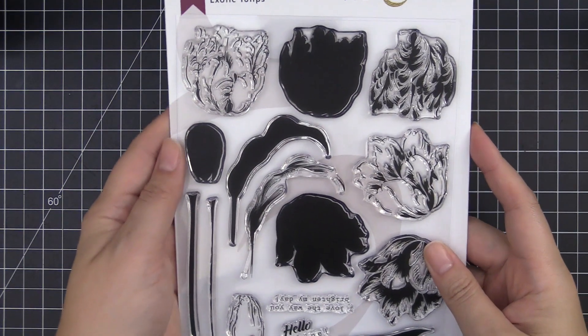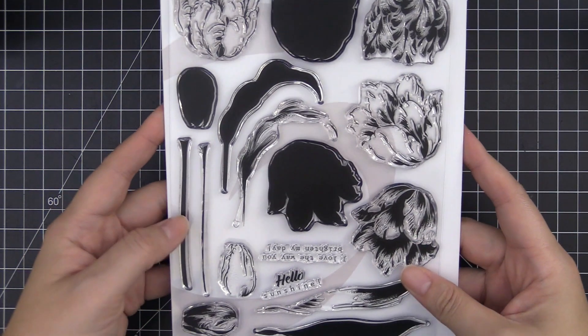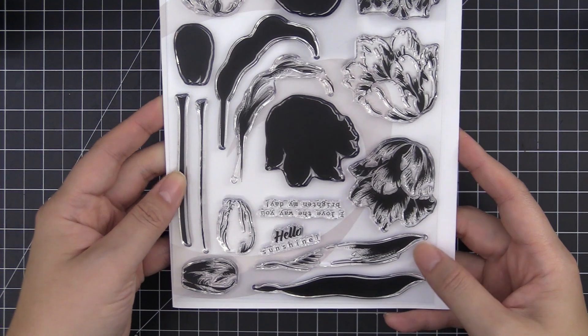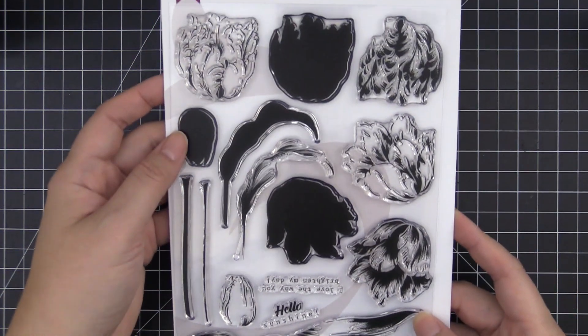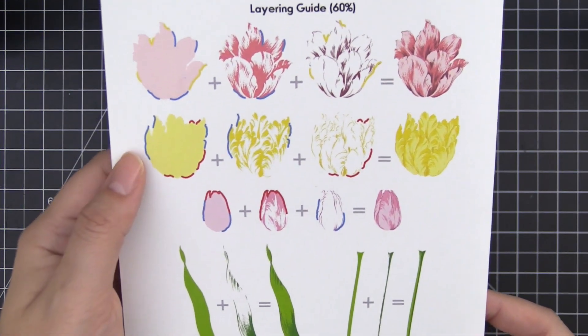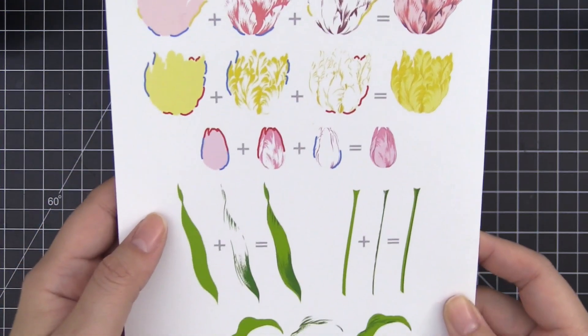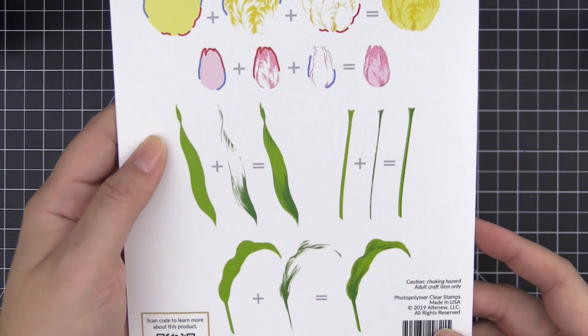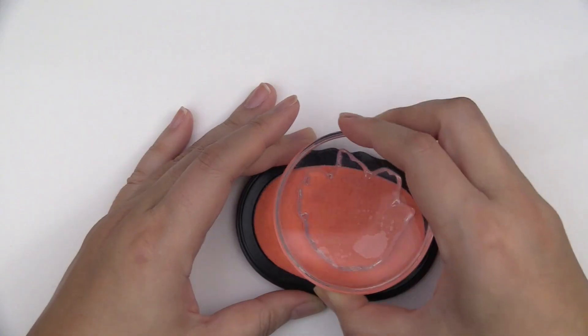In this set, you are going to find two and three different layered tulip images along with layered leaves and stems. Make sure to refer to the layering guide when working with these images alone, but you can also follow along the video steps I'm showing you in this video.